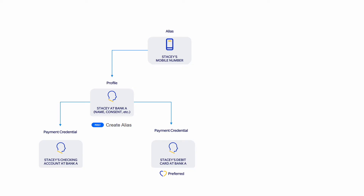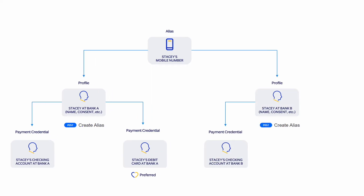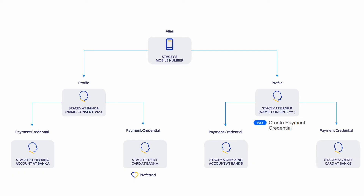The alias directory service also lets a user register the same alias with multiple participants. This is common as a user often has the same mobile number registered at multiple FIs. So if Stacey wants to register with bank B, bank B can use the same create alias API to add more payment credentials under the same alias profile. However, as Stacey's debit card at bank A is her preferred payment credential, it will remain the primary credential for receiving funds. If Stacey wants to add another payment credential like a credit card to the same alias, bank B can use the create payment credential API to add this additional payment credential to her profile.